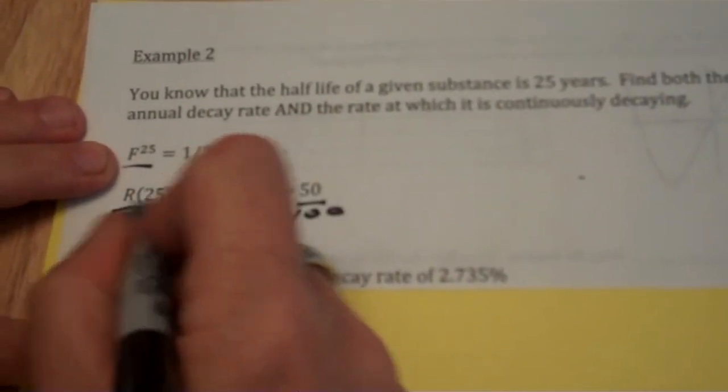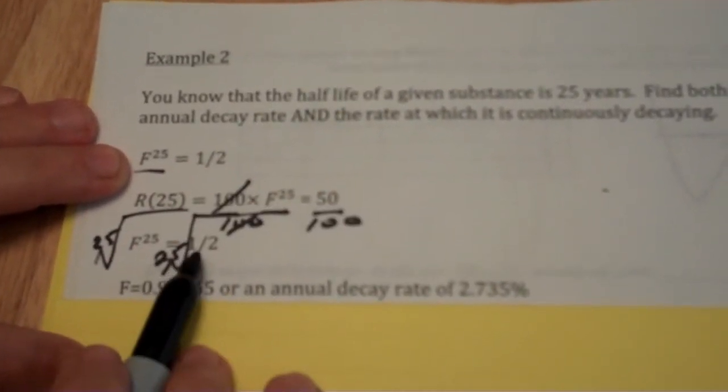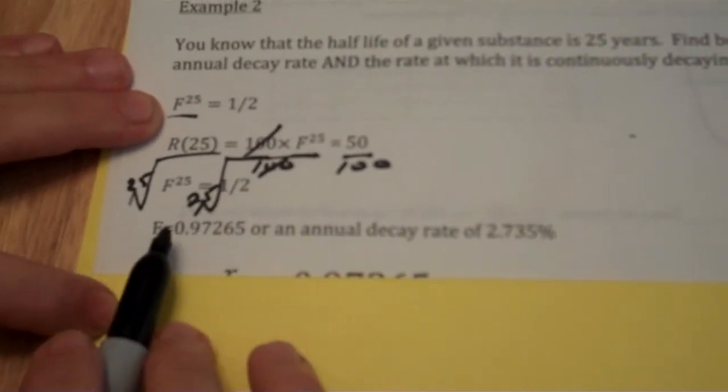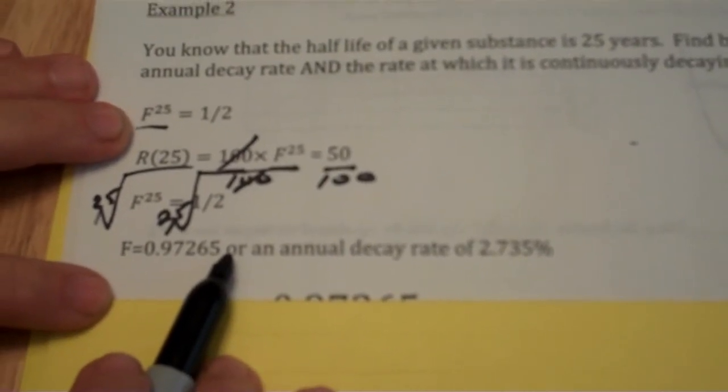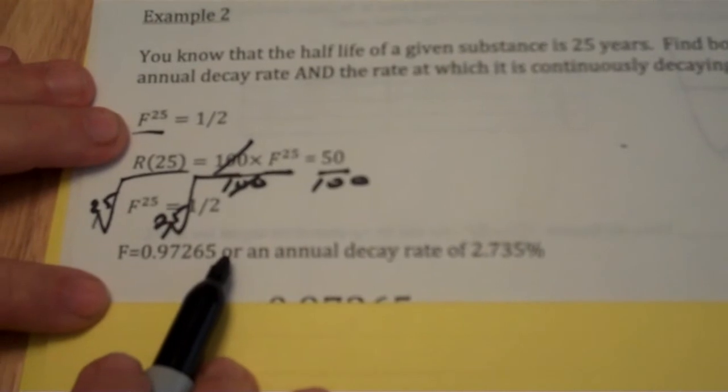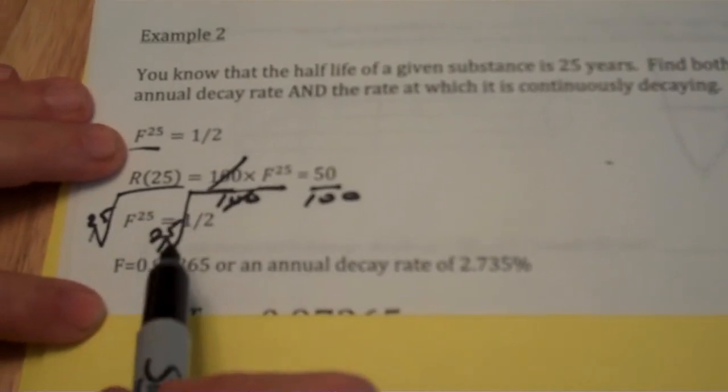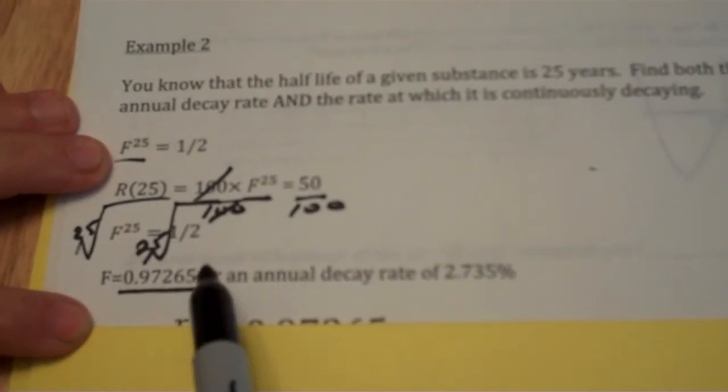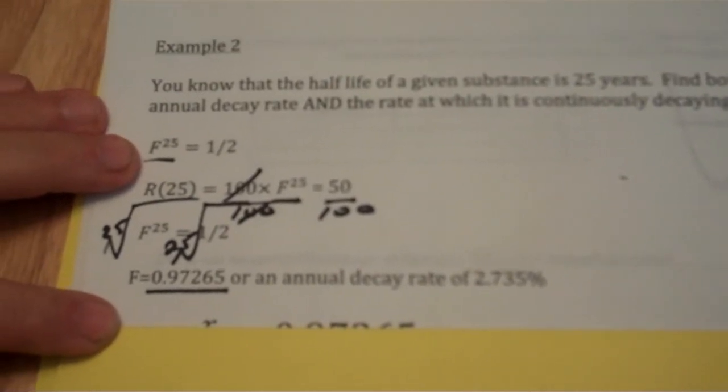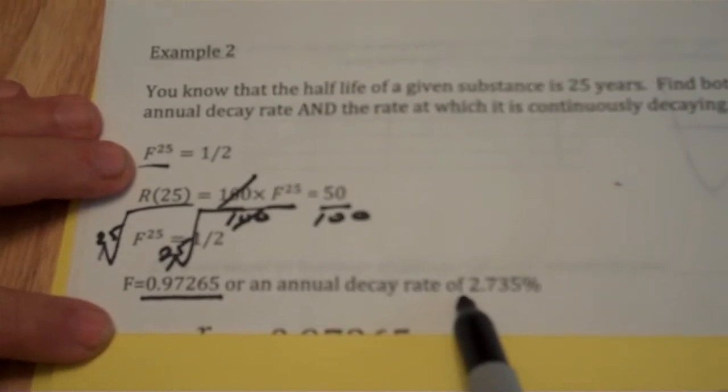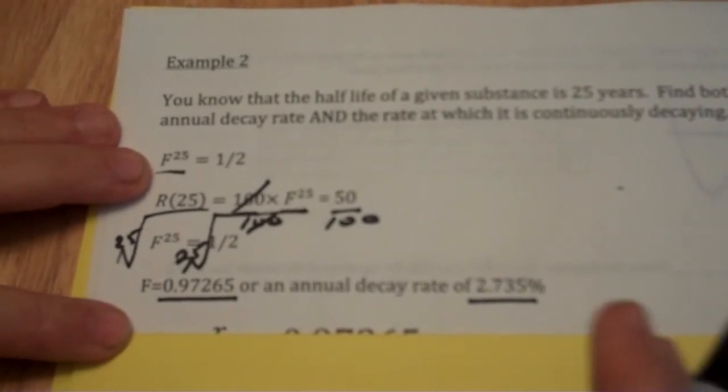Let's solve my equation. I'll take the 25th root of both sides. The 25th root of one-half results in 0.97265. Remember that if no decay occurs, there's 100% remaining the next year. But in this case, approximately 97% is left the remaining year. Subtracting that from 100% tells me that roughly 2.735% is the rate it's decaying at.